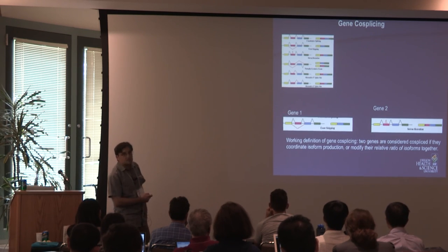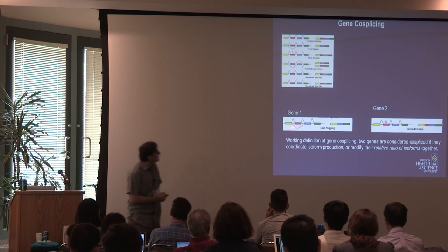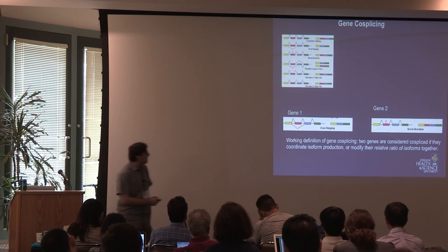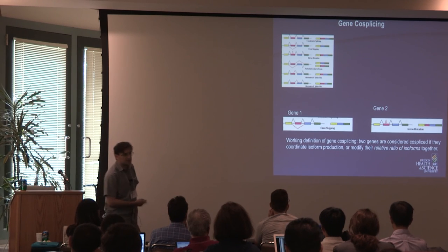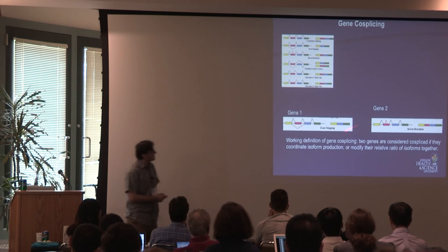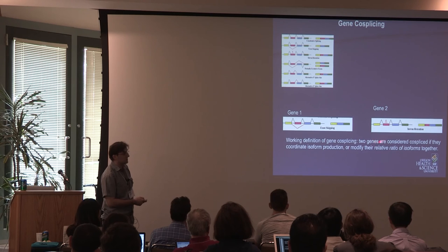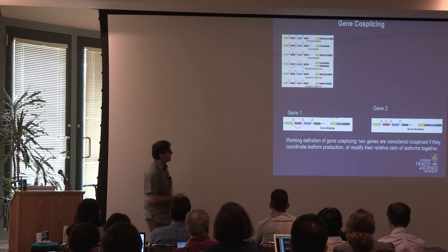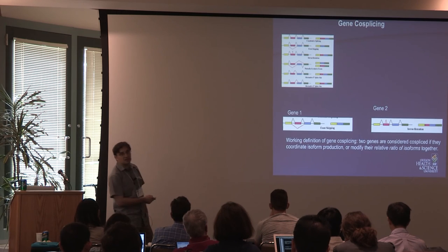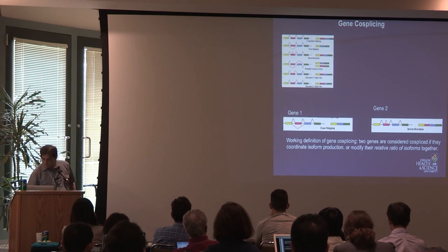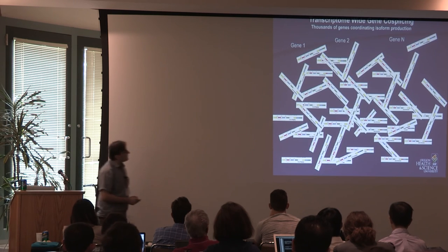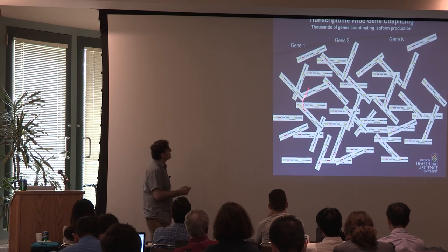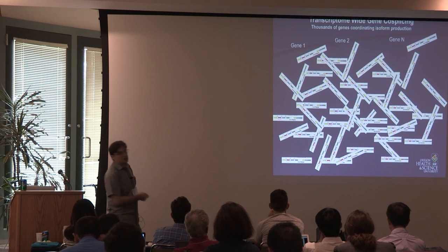What do I mean by co-splicing? Suppose we have one gene and every once in a while it skips an exon. Now you have a second gene that every once in a while keeps the intron in the transcript. My working definition of gene co-splicing is: I want to evaluate whether these two separate genes coordinate their isoform production — so whenever one keeps the exon, the other will keep the intron, or variations on this theme. We have thousands of genes in the transcriptome, each possibly producing several isoforms, and I want to integrate all of this in the WGCNA framework.